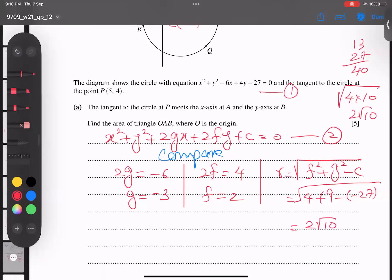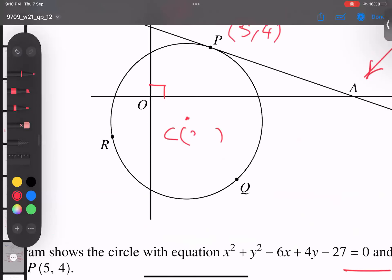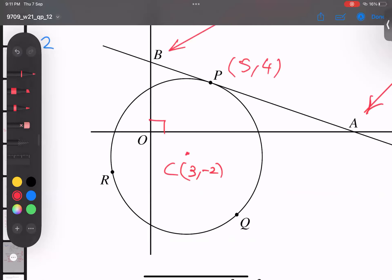So center, students, all of you know, by the formula is minus G and minus F. So this sign will change. These two will go there. This is the center (3, -2), and for your knowledge, this is the radius 2 root 10. And this is 90 degrees.